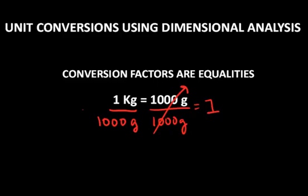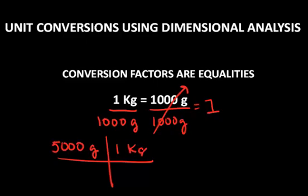For example, if I wanted to convert how many kilograms are in 5,000 grams, I start with 5,000 grams and I would multiply by the unit factor, 1 kilogram per 1,000 grams.